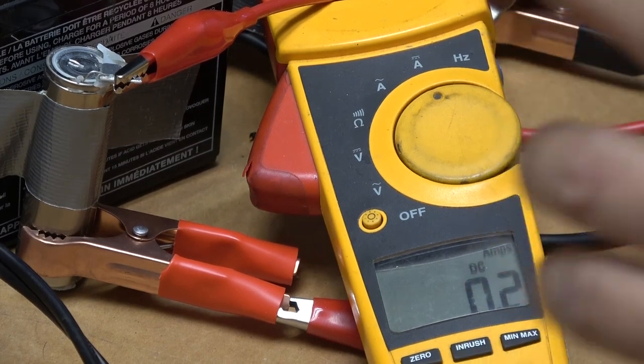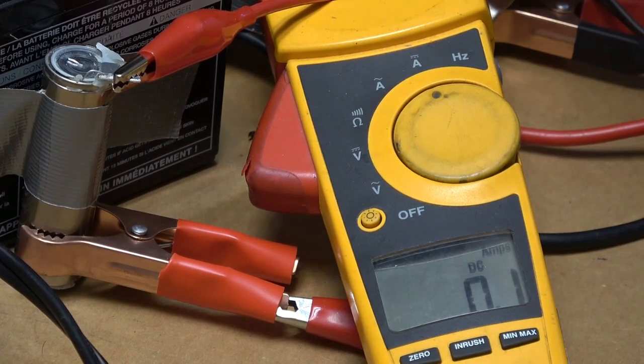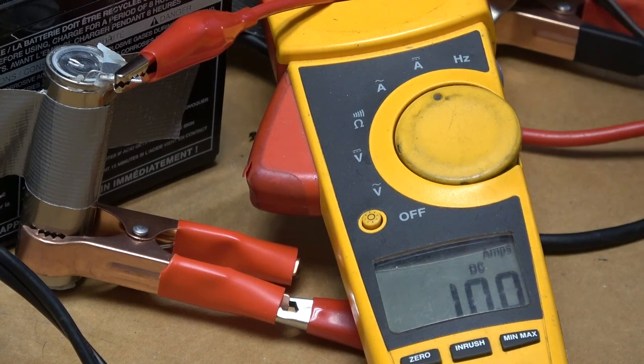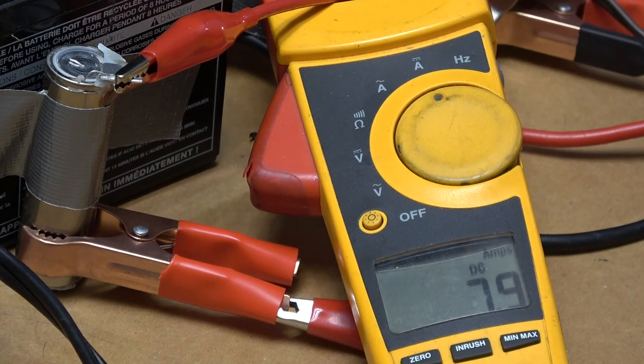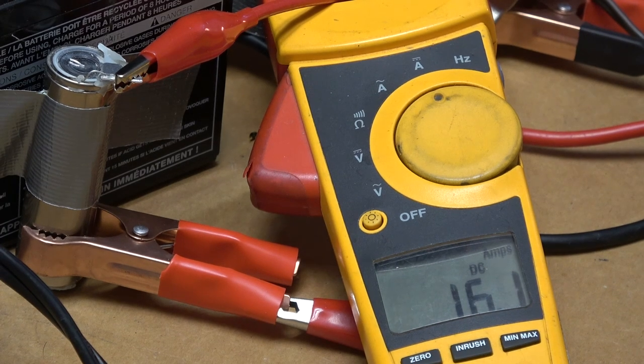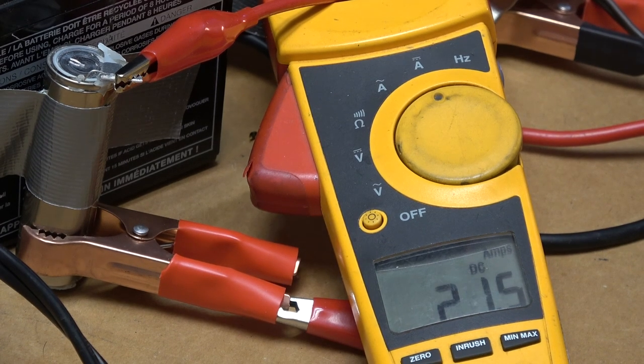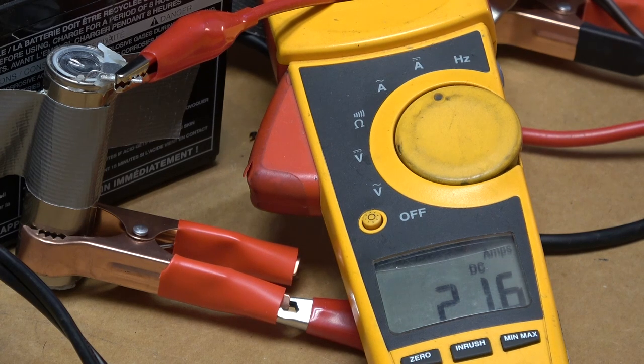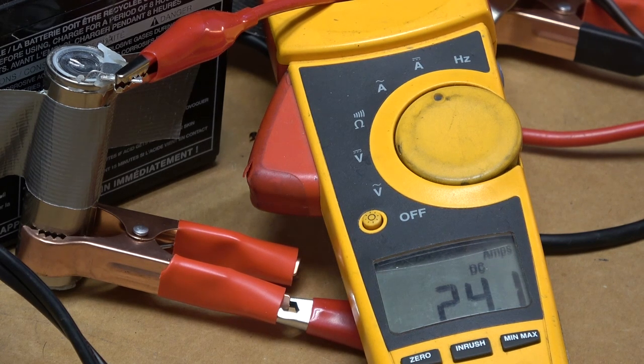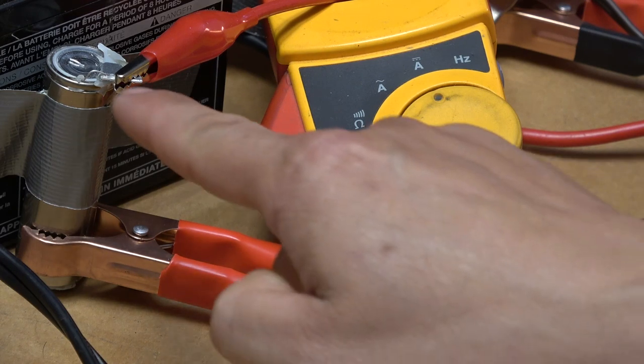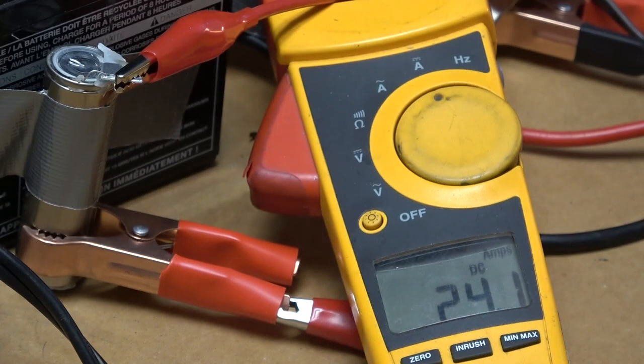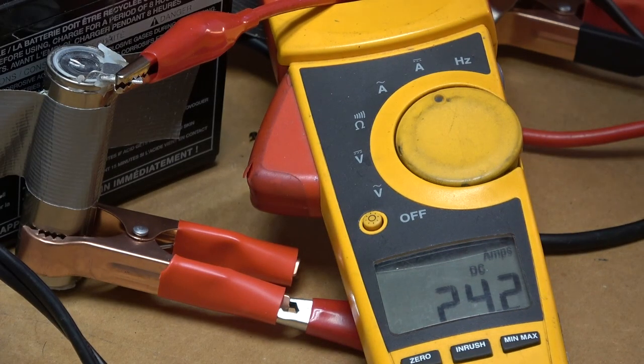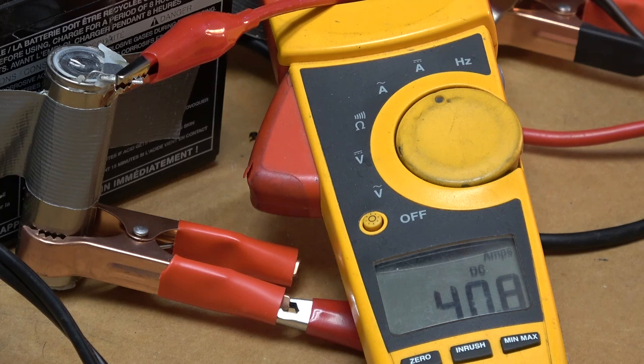Here we go. I'm going to plug in the light bulbs one at a time to increase the current slowly. Ready? 7.9 amps... 16 amps... 21 amps... 24 amps. Still working, fuse is still fine. Let's turn on the second inverter. 40 amps.